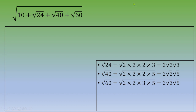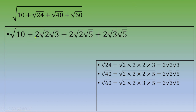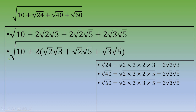Now you substitute these values back in. You can notice that the three last terms have a common factor of 2, so you can factor by 2. You end up with square root of 10 plus 2 times the quantity square root of 2 times square root of 3, plus square root of 2 times square root of 5, plus square root of 3 times square root of 5.